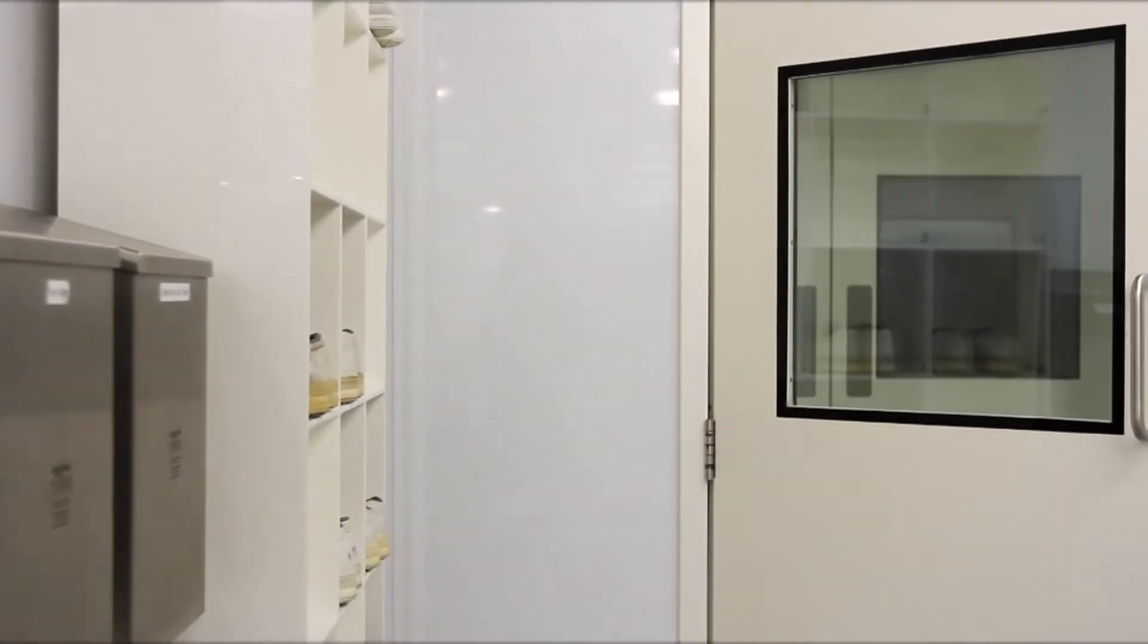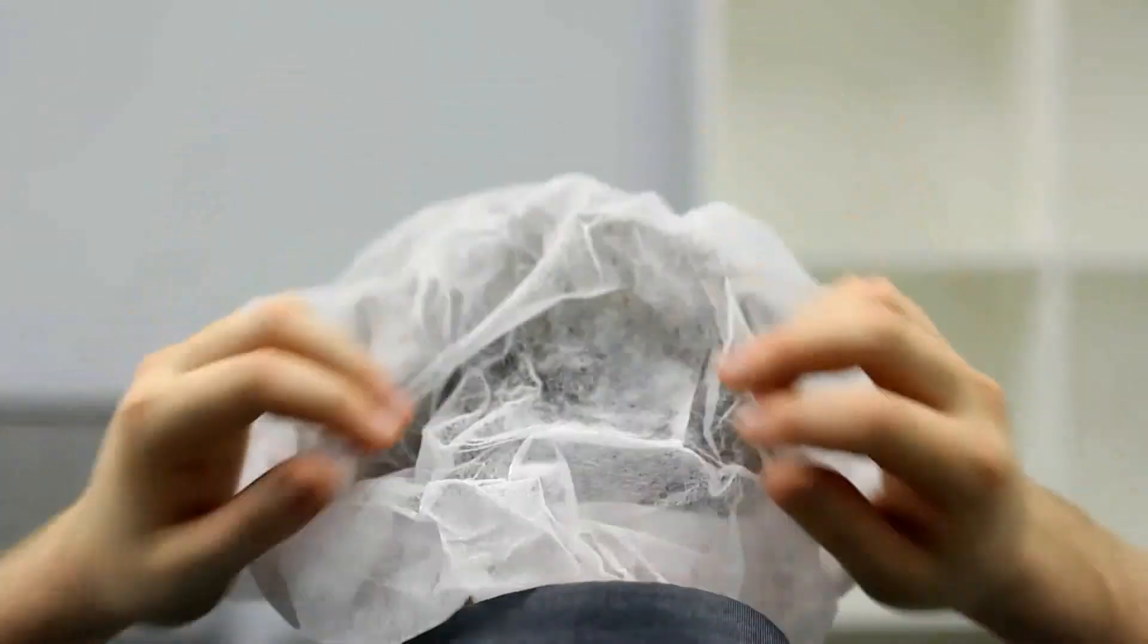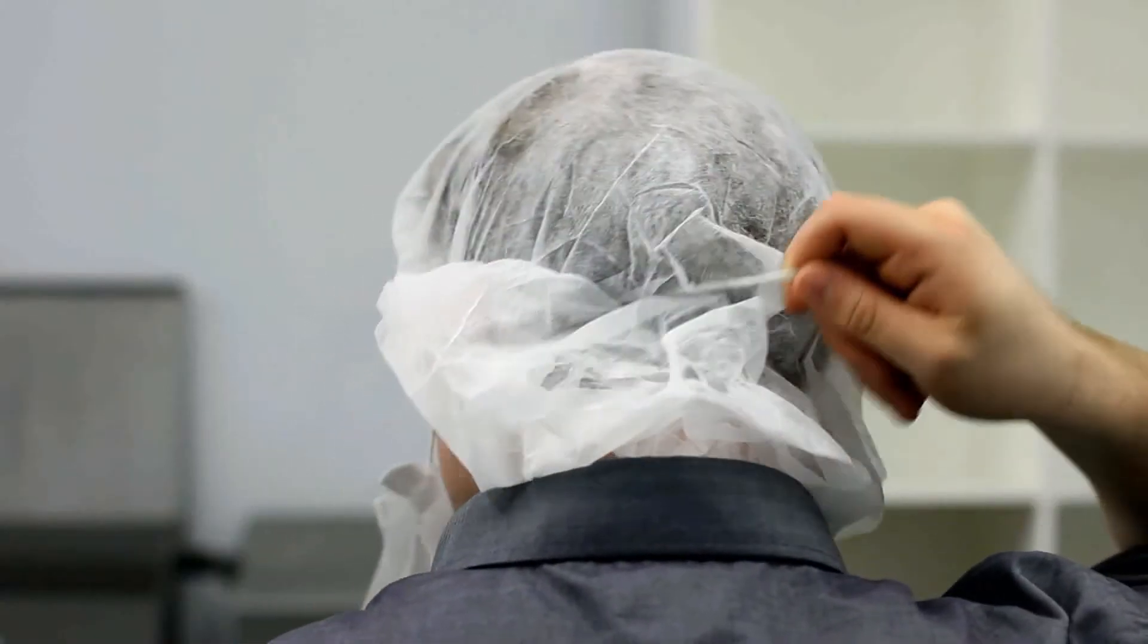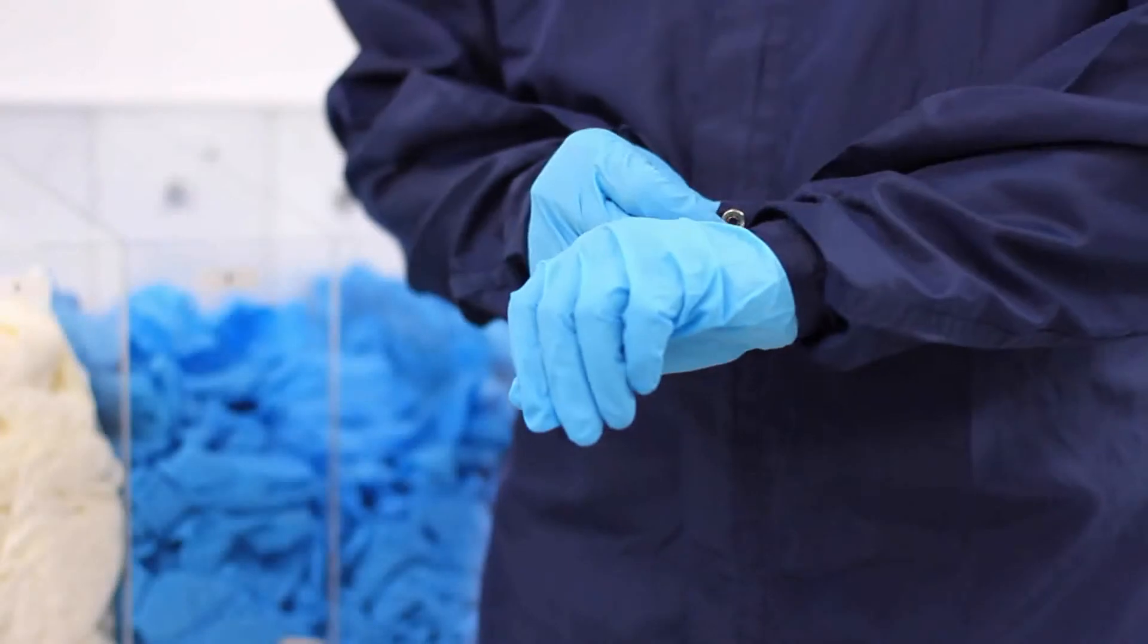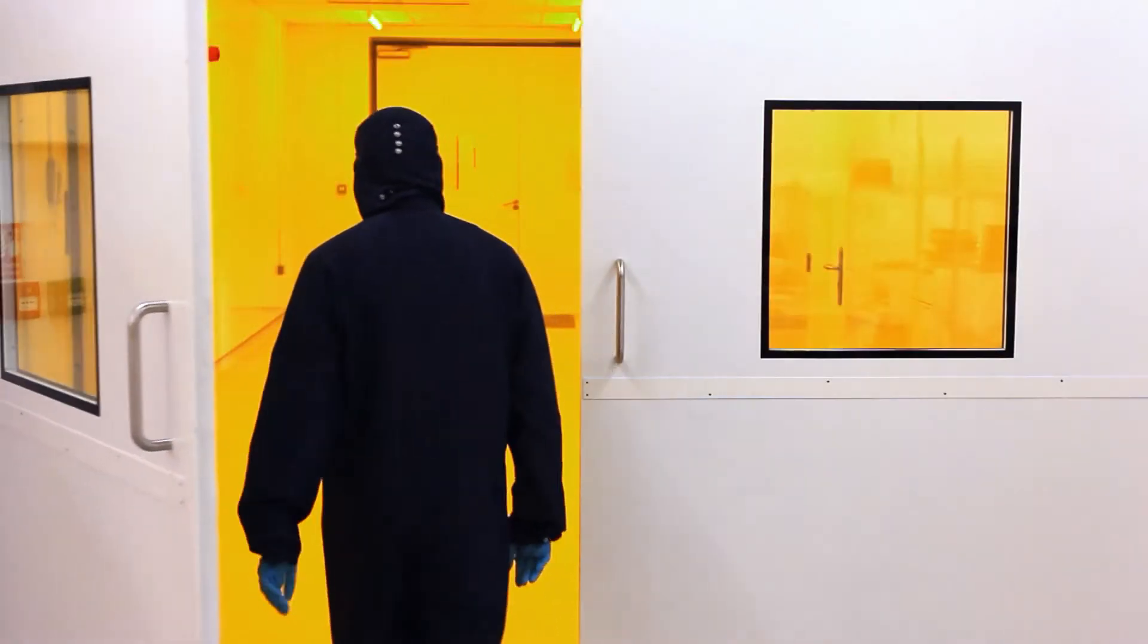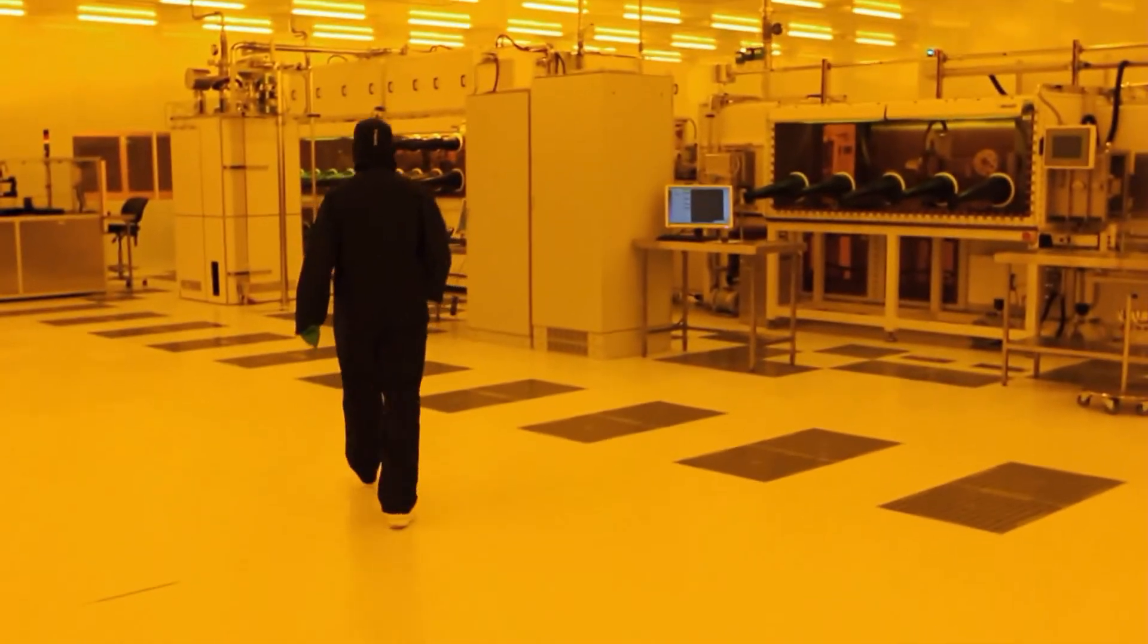CPI's OLED OPV prototyping line has been designed to enable the development and production of both organic light-emitting diode and organic photovoltaic technologies. The line enables users to address some of the challenges faced by the industry in scaling up the technology to wide area and ultimately commercialisation.